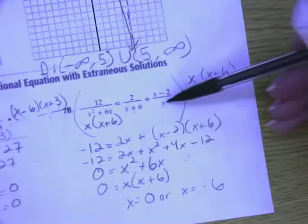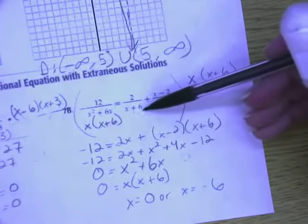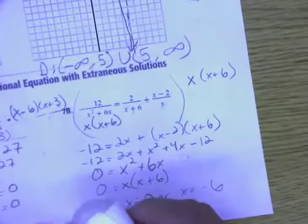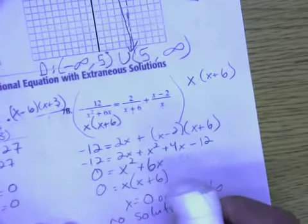Oh, my. Well, that doesn't work, because if x equals 0, then I'm dividing by 0. And if x equals negative 6, well, that doesn't work either. So, there are no solutions.